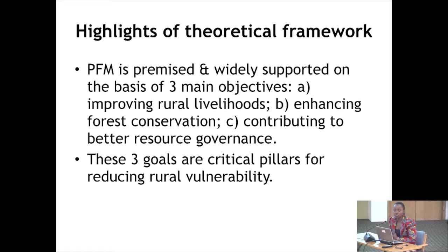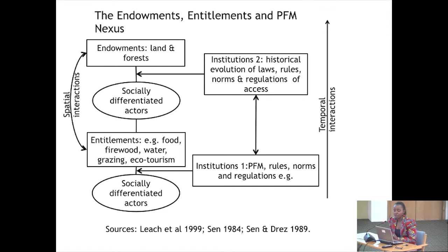These three goals are critical pillars for reducing rural vulnerability. Endowments constitute initial resources such as land and forest, which are then utilized by socially differentiated actors to produce different claims such as food, firewood, water, grazing, and ecotourism — which in turn either reduce or increase people's vulnerability. PFM as an intervention comes in where resources such as forest are being used, producing either reduced or increased vulnerability of socially differentiated actors.